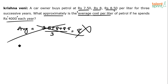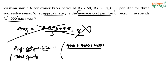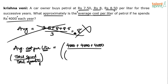The correct average cost per liter equals total cost divided by total quantity. Total amount spent is 4000 rupees in the first year, 4000 in the second year, and 4000 in the third year. In the first year he spends 4000 rupees at 7.5 rupees per liter, so the quantity he gets is 4000 / 7.5.